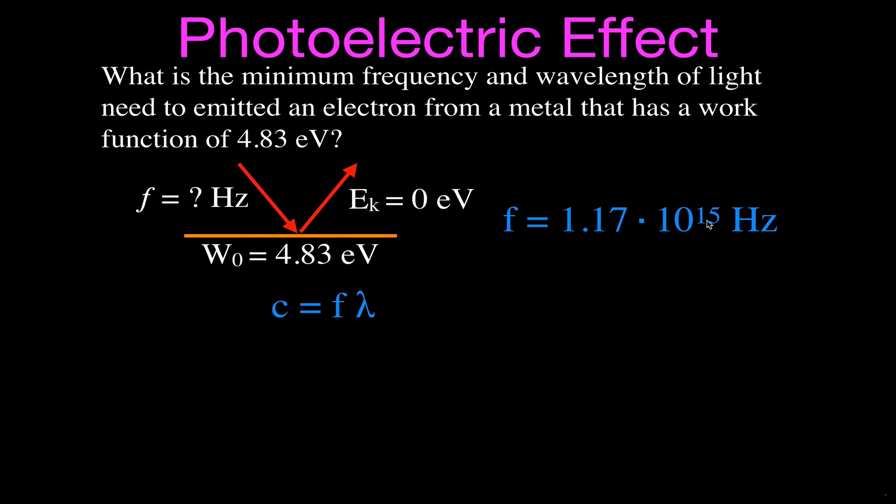We know the frequency. We got that in the previous slide. C is the speed of light. It's given. So we know the wavelength is equal to C divided by F, and that means the wavelength is C, which is speed of light, 3.0 times 10 to the eighth meters per second, divided by the frequency. The frequency we found on the previous page, 1.17 times 10 to 15 hertz.